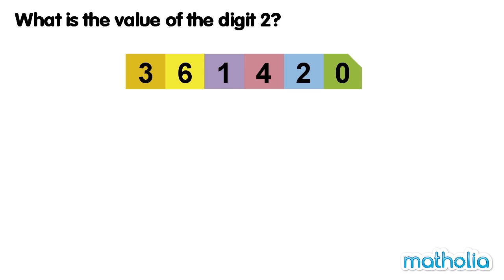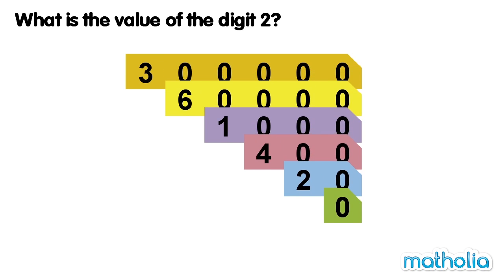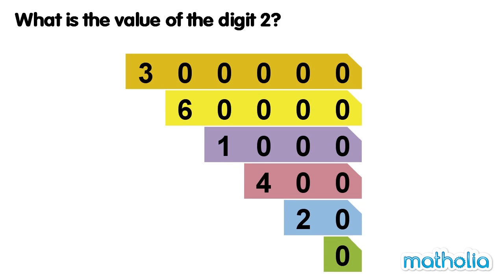What is the value of the digit 2? Place value cards have been used to make the number 361420. Let's find the value of the digit 2. Let's separate the number into its different place value cards. We can see that the digit 2 has a place value of 20.